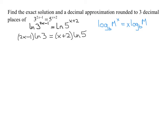This is in fact a linear equation in X, since X appears to the first degree on both sides. The natural log of three and natural log of five are just numbers, so we treat them as such. I distribute the natural log of three into the parentheses to get two X times the natural log of three minus the natural log of three. Then I distribute the natural log of five into its parentheses to get X times the natural log of five plus two times the natural log of five.